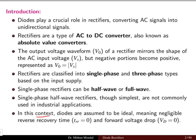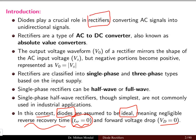In this context, whatever rectifiers we are going to study, the diodes which comprise the rectifiers are assumed to be ideal. When we say ideal diodes, it means the reverse recovery time is zero and the forward voltage drop is also zero. So in the theory and problems involving rectifiers, the diodes will be ideal in nature.